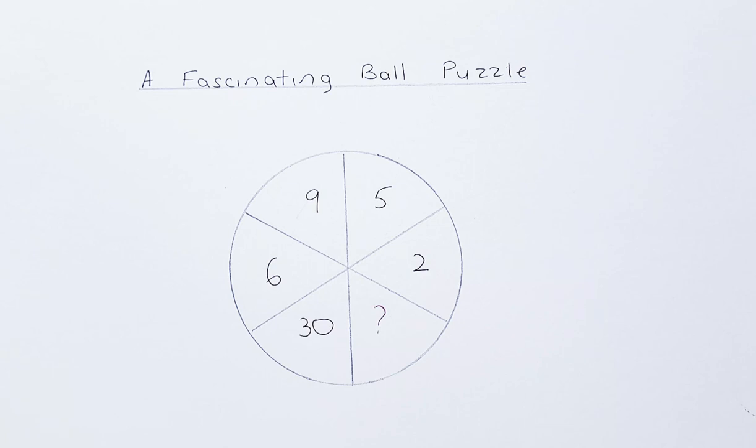5 to 9, by 4. And then 9 to 6, decrease by 3 again. And then from 6 to 30, you increase by 24. So it doesn't make sense to do that.